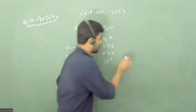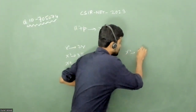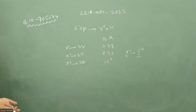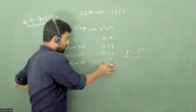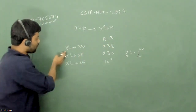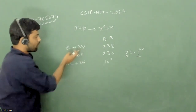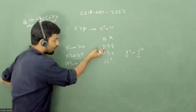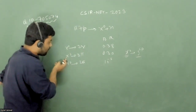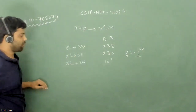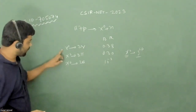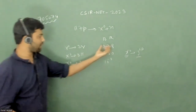You have to calculate the spin, charge conjugation, and parity of this x0 particle. Most students get confused by the branching ratios, but branching ratio simply means the fractional decay rate. So x0 decays to 2 gamma with fraction 0.38, to 3 pi with fraction 0.30, and to 2 pi with fraction 10 to the power minus 3.